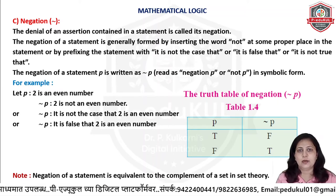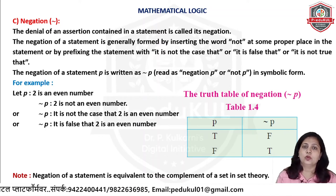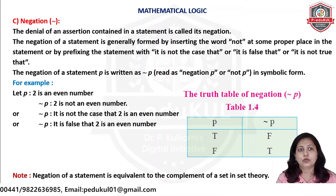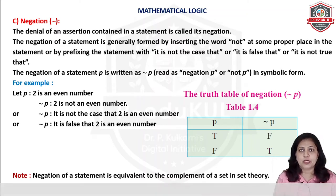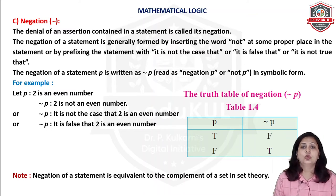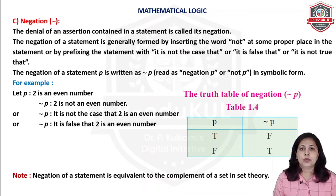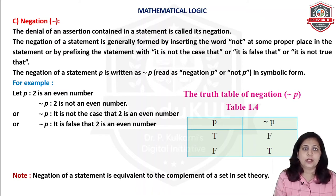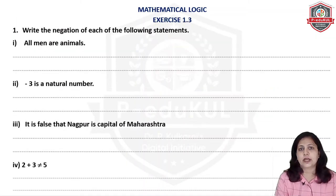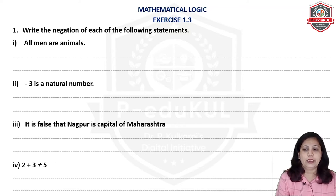The negation table is very simple, because we have only true and false values. Truth values are only true and false. If we cannot assign truth values to any statement, they are not statements — they are sentences. So, the exercise is very simple as we just have to write the negation. You all have to solve with me so that your notebooks will be completed.